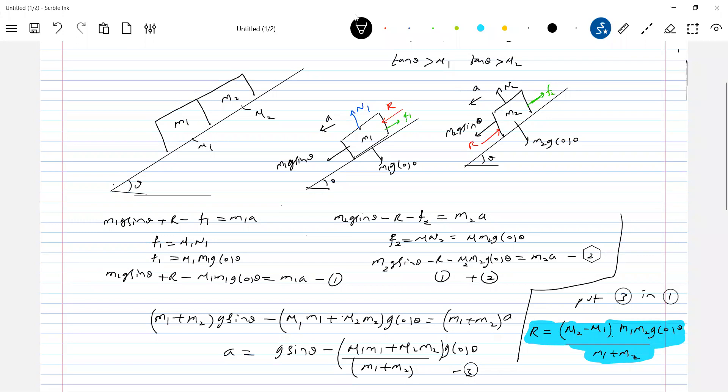Any doubt? Sir? Won't there be friction between those two blocks sir? How come friction? There is no latent motion perpendicular to incline. Why friction between the blocks will come? Okay sir.